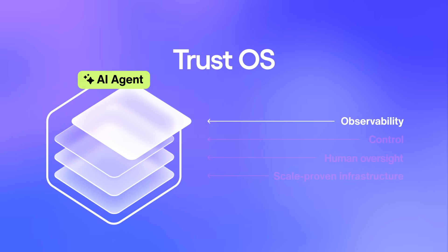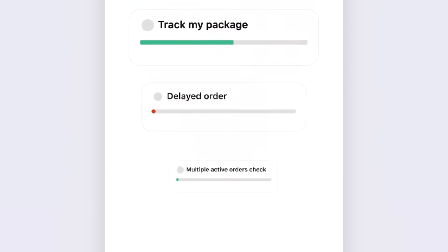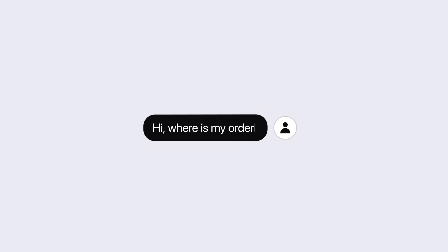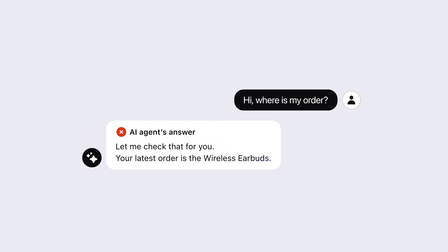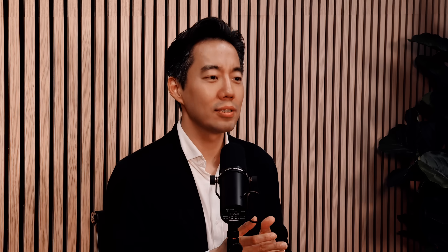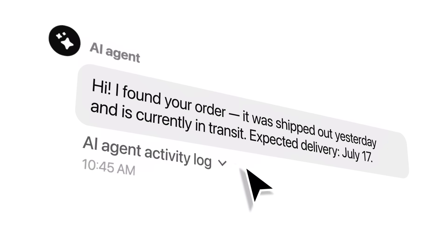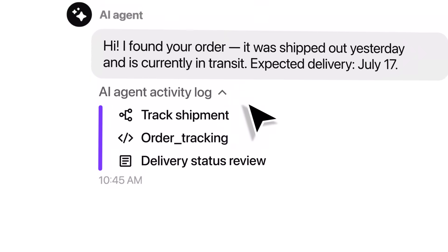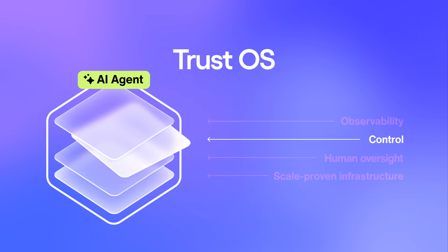Let's break that down. Observability is the diagnostic layer of Trust OS — this is how you see exactly what your AI is doing and why. With conversation benchmark testing, you can run tests anytime or schedule them to run automatically in the background. And when something breaks, you see exactly what went wrong so you can fix it before it ever hits production. With activity trails and audit logs, you can track every decision your AI made and catch issues early.